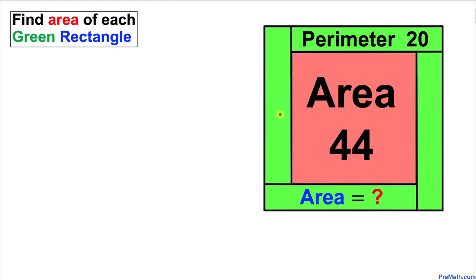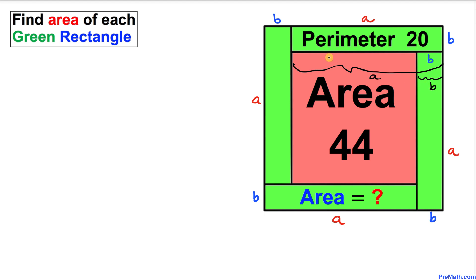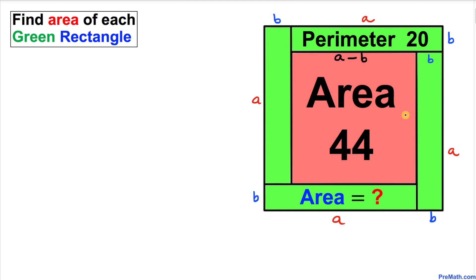Let's get started with the solution. Let's focus on each individual green rectangle. Let's assume that the length of each rectangle is a, and moreover the width of each rectangle is b, as you can see here. Now this length is a and this length is b, so their difference is a minus b. We know that this red shape is a square, so each side length is going to be a minus b.